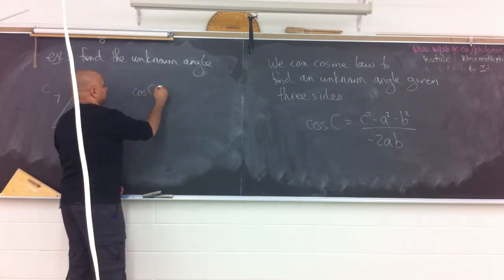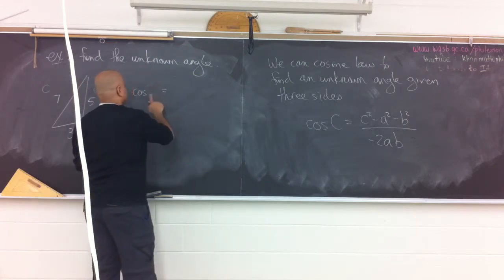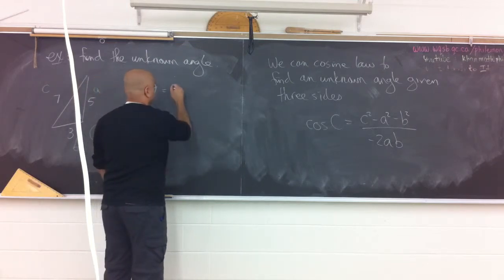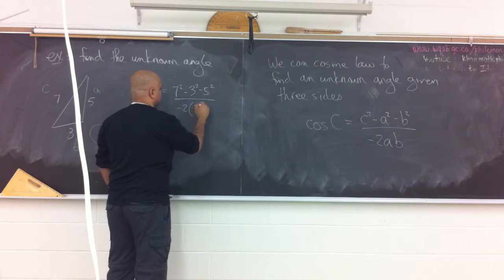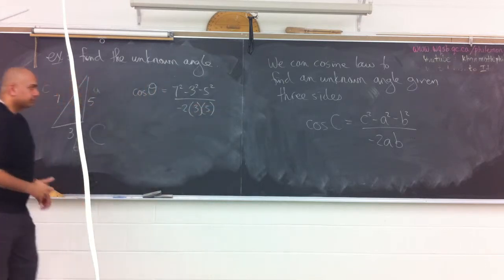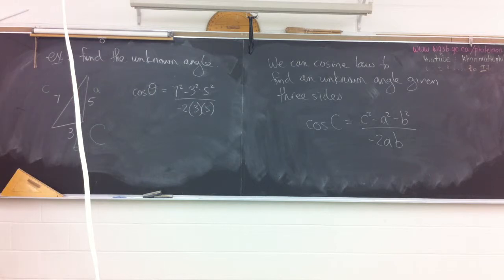The formula's over there. I'll write the first step. Cosine theta is equal to 7 squared minus 3 squared minus 5 squared, all divided by negative 2 times 3 times 5. This formula is perhaps one that maybe you don't want to do in one step. That just comes down to your proficiency with your own calculator. Personally, I don't like doing this in one step. I do the top and the bottom and then do the division afterwards. But I'll leave that to you.